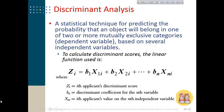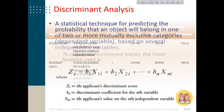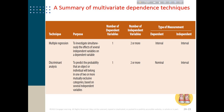To summarize, we have discussed two dependence techniques: Multiple Regression and Discriminant Analysis. Both are used when you have one dependent variable and two or more independent variables. The difference lies in the type of measurement: for Multiple Regression, the dependent variable must be interval or ratio scale, whereas for Discriminant Analysis it must be nominal. Independent variables can take any form in either technique.